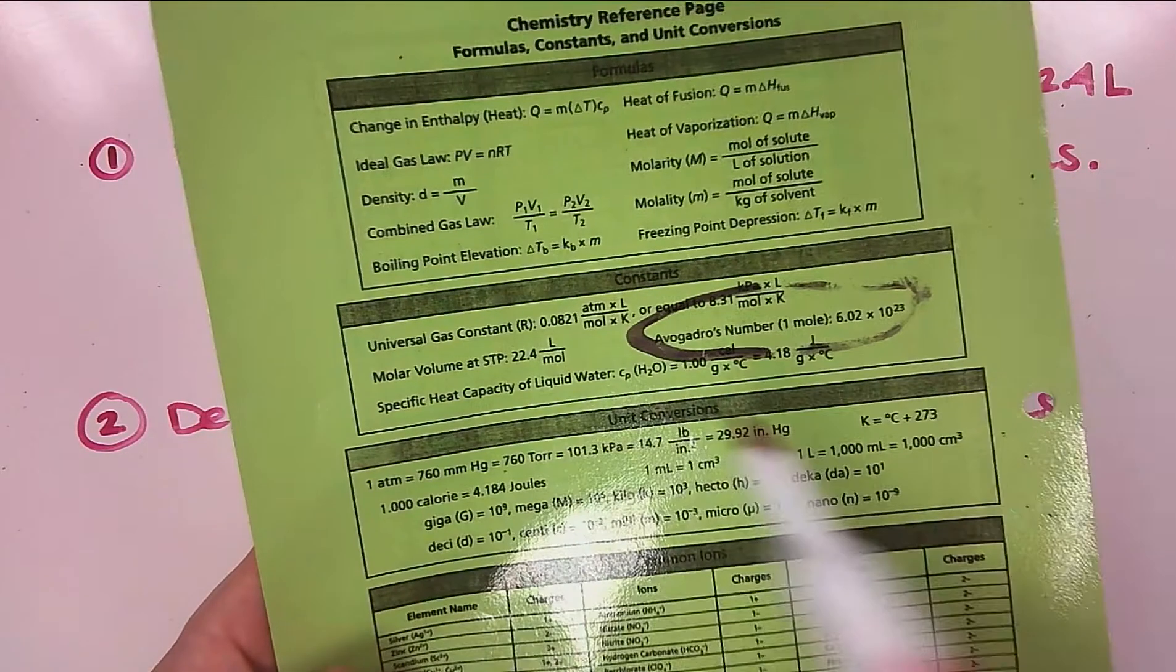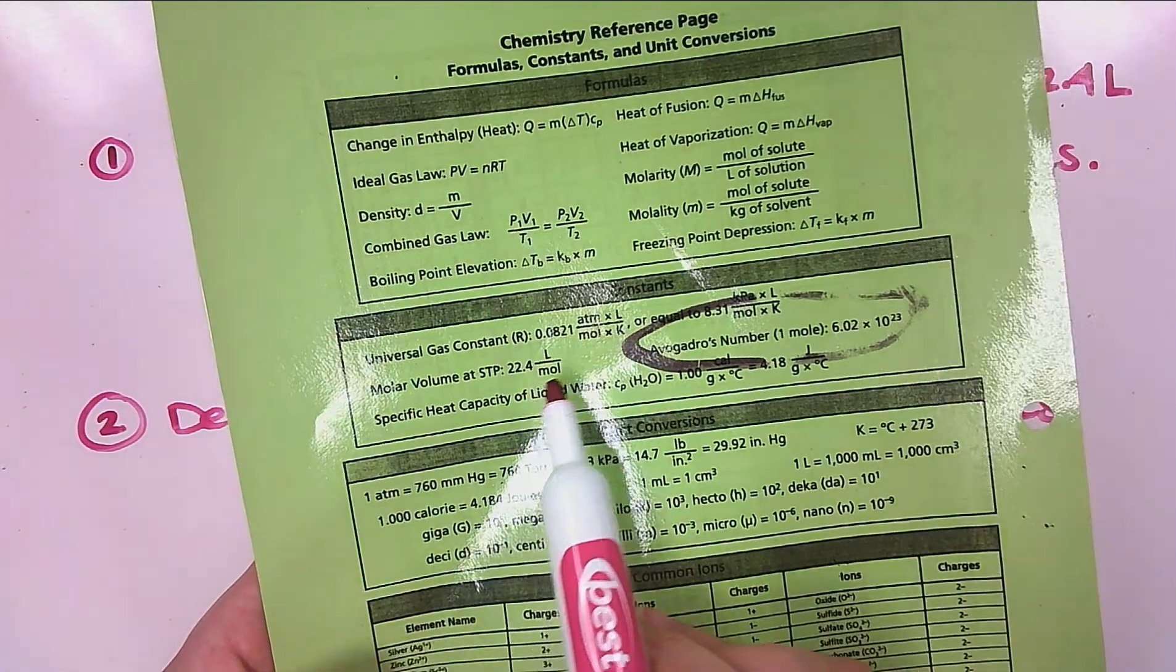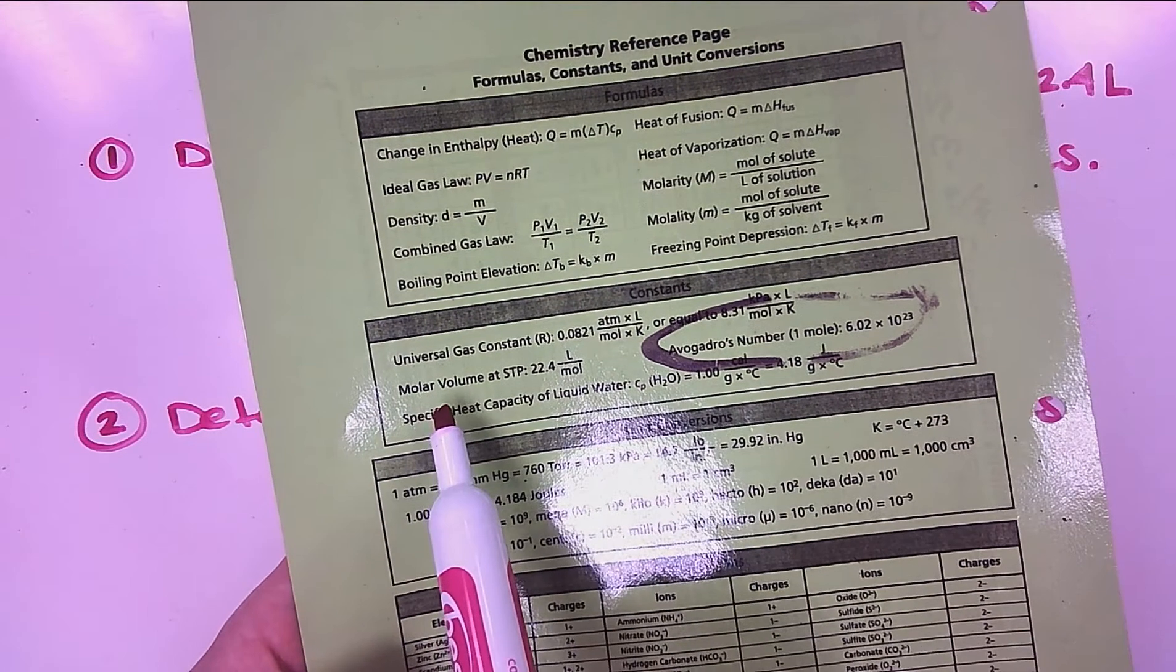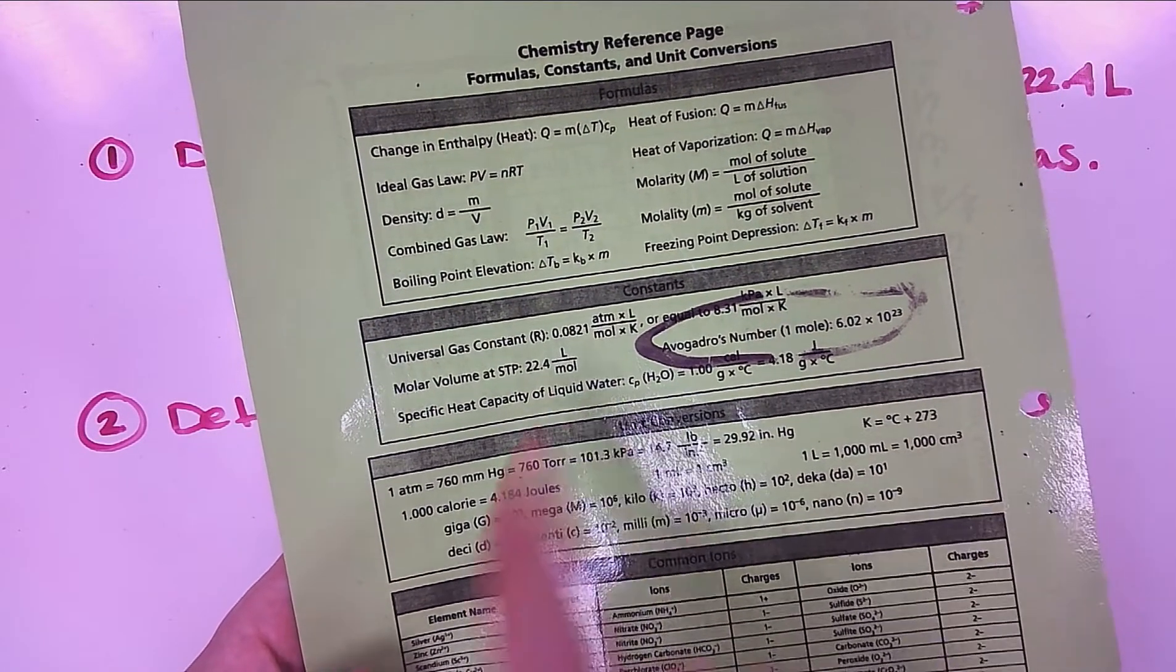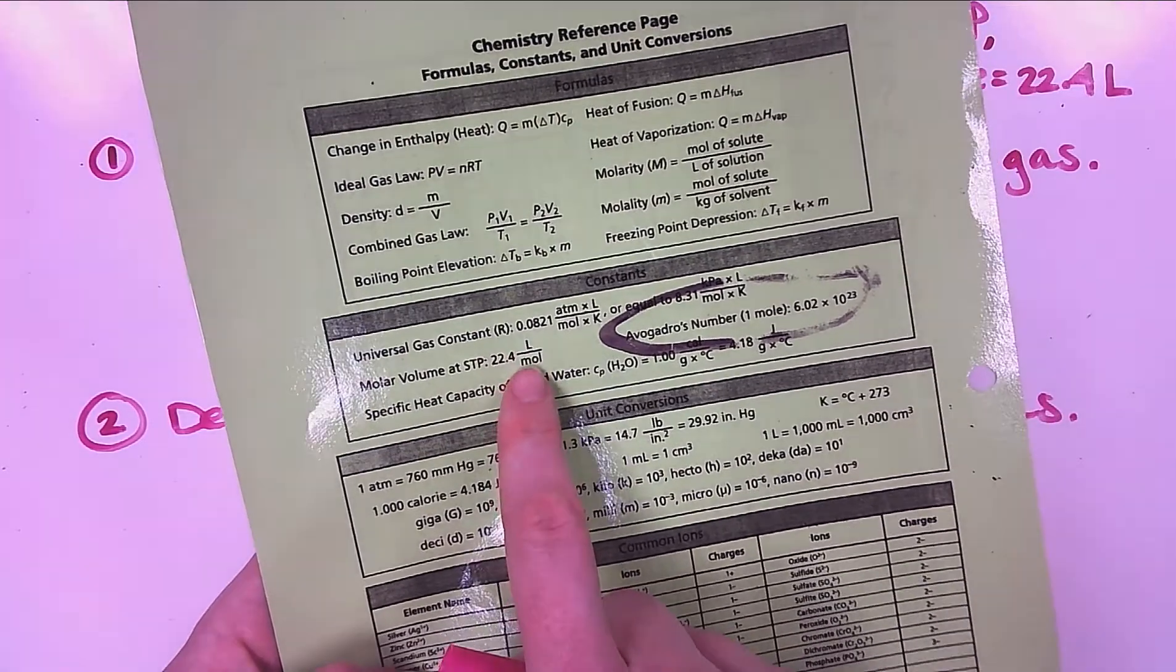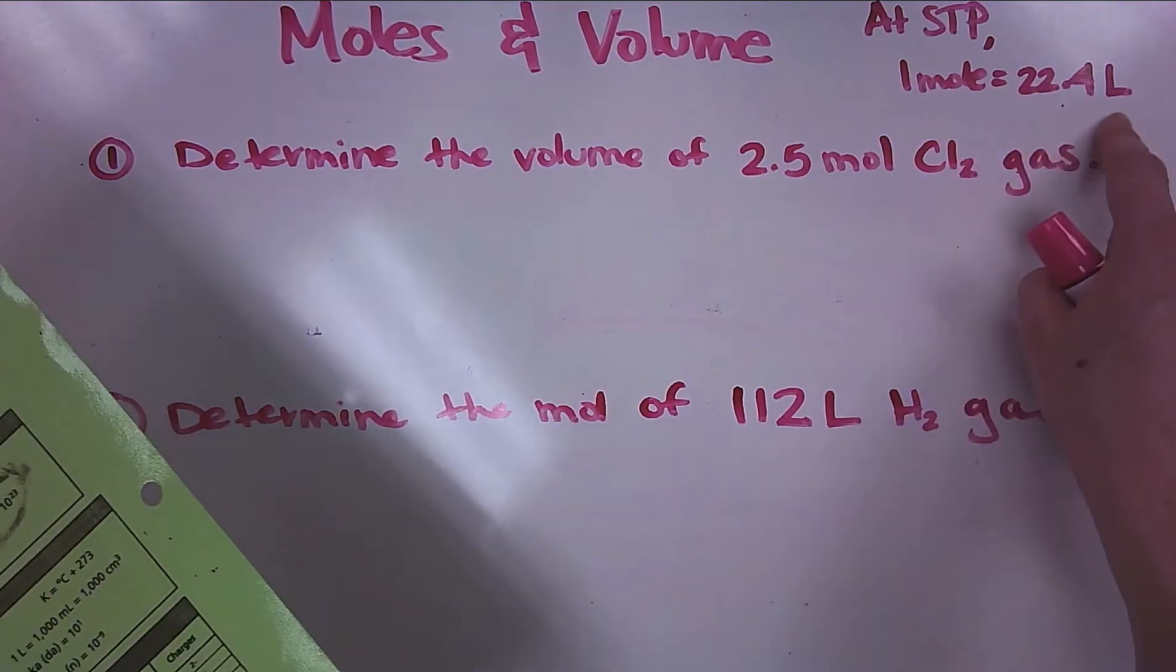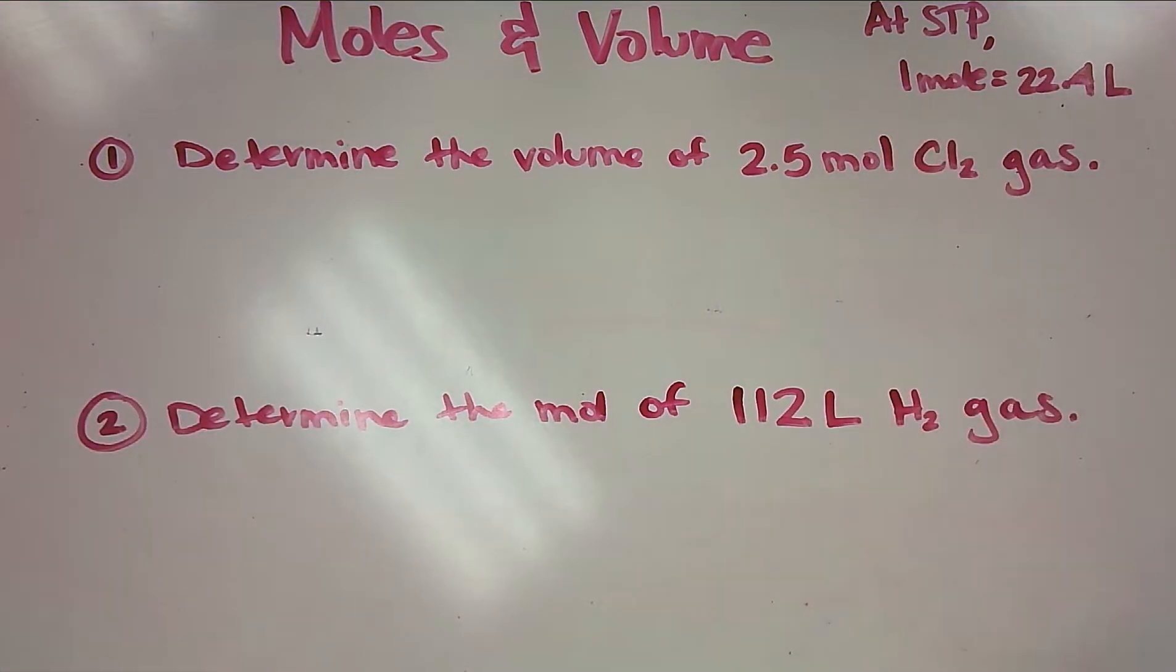I do want to point out that this is found on the back of your reference page right in the middle under constants. So molar volume at STP is equal to 22.4 liters per mole, or what we have written, 22.4 liters per one mole.